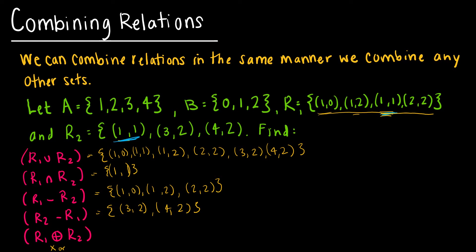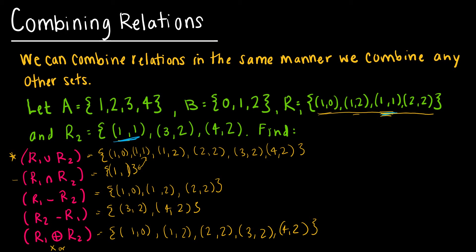The last one is R1 XOR R2, which means it can be in one or the other but not in both. So essentially it's like taking the union minus the intersection. That gives all values in the union: (1,0), not (1,1) because that's the only one in the intersection to take away, then (1,2), (2,2), (3,2), and (4,2). And that is how we combine them.